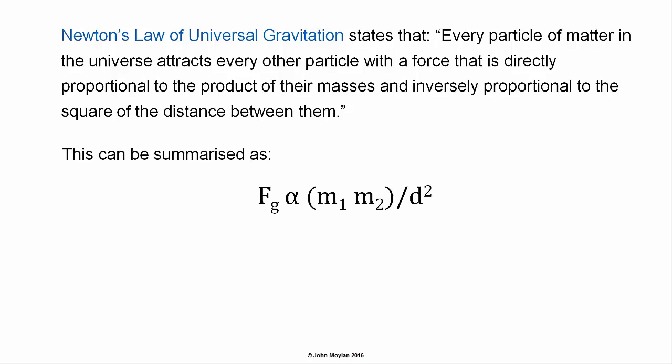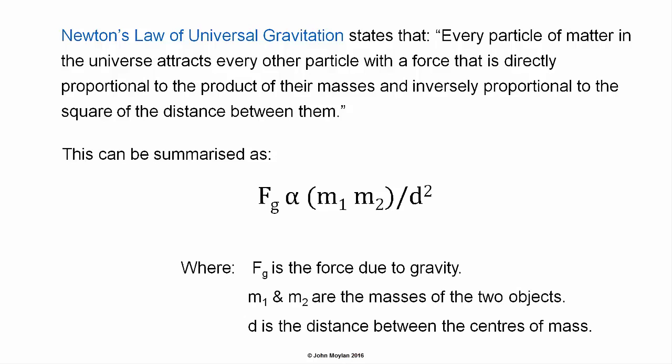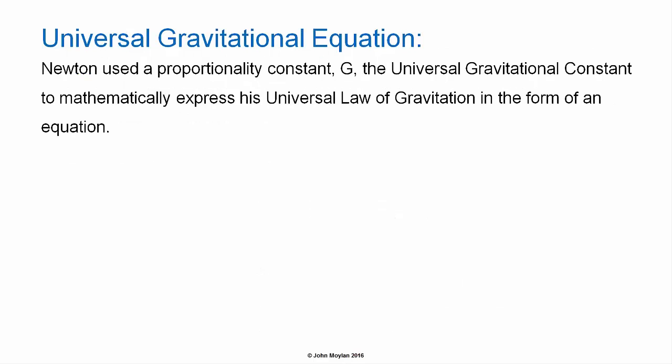This can be summarised as F_g is proportional to m1·m2 over d squared, where F_g is the force due to gravity, m1 and m2 are the masses of the two objects, and d is the distance between the centres of mass of the two objects. Newton used a proportionality constant, capital G, the universal gravitational constant, to mathematically express his universal law of gravitation in the form of an equation.